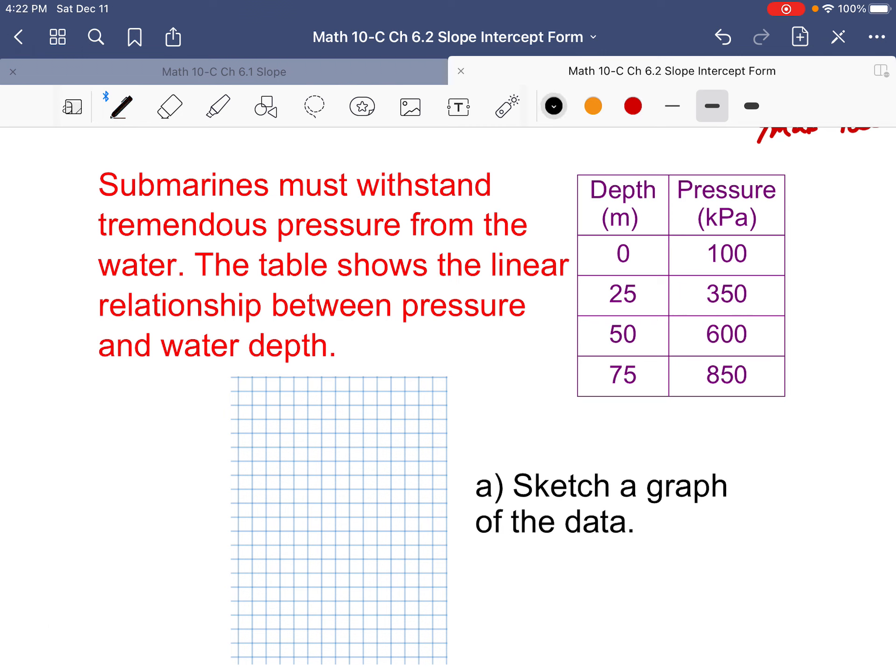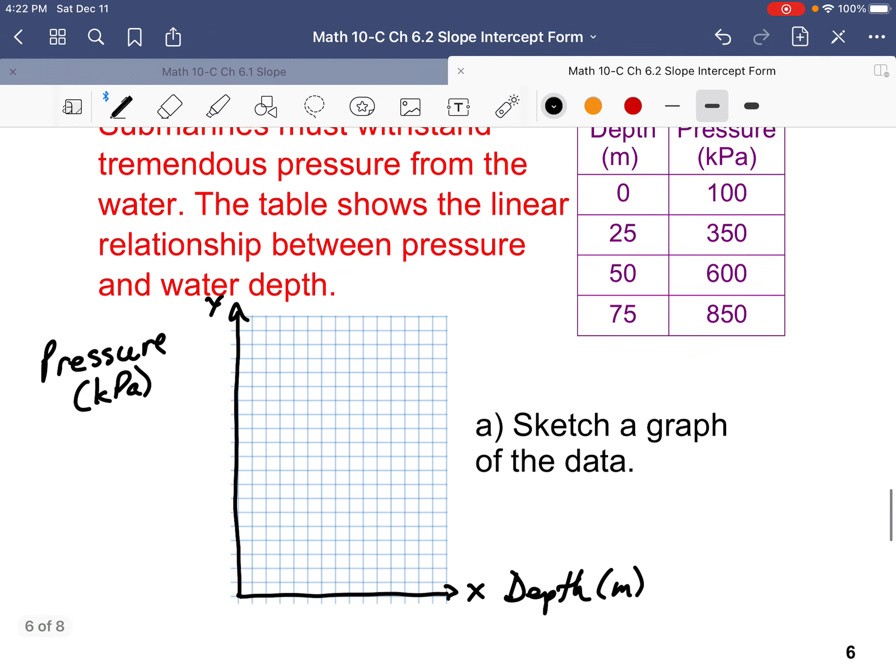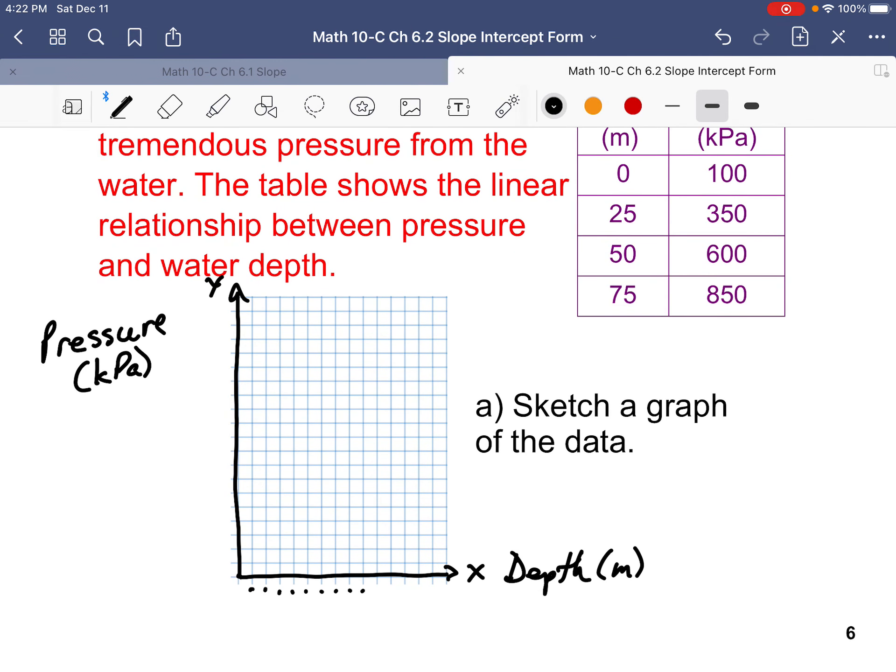Welcome back. Moving on to the last set of questions. Submarines must withstand tremendous pressure from the water. The table shows the linear relationship between pressure and water depth. Pressure depth x, pressure y. So, zero meters, 100 kilopascals. 25 meters, 350 kilopascals. So, looking at our graph here, this is going to be x, which is depth in meters. This is going to be a y-axis pressure in kilopascals. So, let's see now. 5, 10, 15, 20, 25, 30, 35, 40, 45, 50, 60, 70. Oh, it just fits. Good.